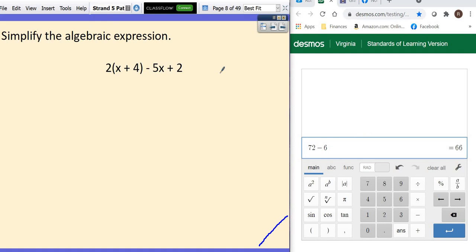Okay. And we've got one last one. We're going to distribute and then combine like terms. So let me start by distributing 2 times x is 2x. 2 times a positive 4 is a positive 8 minus 5x plus 2.